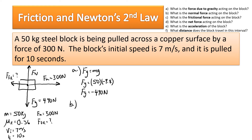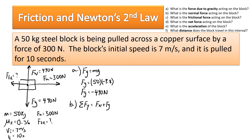Part B asks for the normal force. Just from the free body diagram, we can see it's 490 Newtons. Writing the net force equation in the Y direction confirms it: the net force in Y equals zero because there's no acceleration through the table. The weight is negative, so negative 490 plus the normal force equals zero, giving a normal force of 490 Newtons.